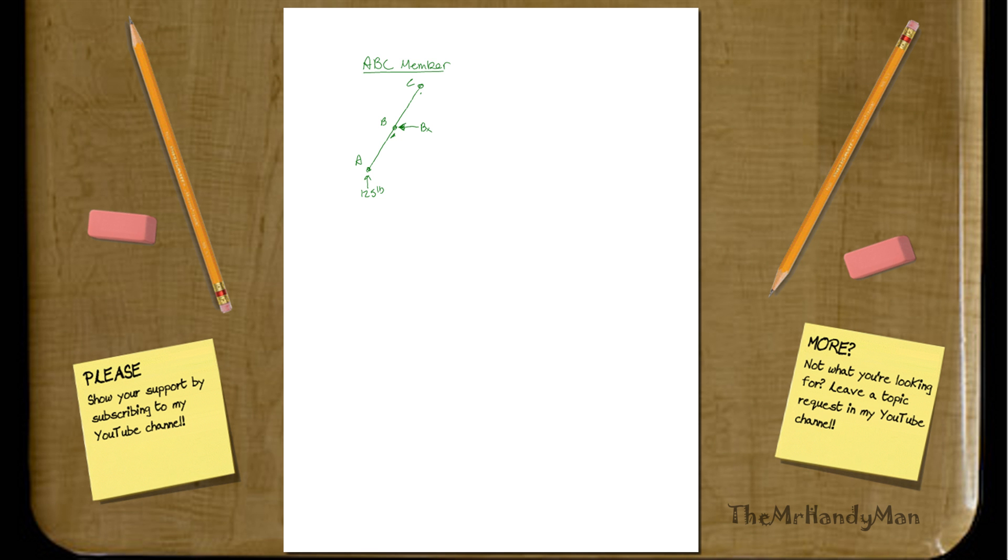We already know what BY is. BY is going to be 250 pounds down in that last diagram, thus up in this diagram. And then, you're going to have CX and CY. You just keep it all the same, and you keep trying to run with it.